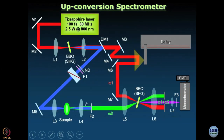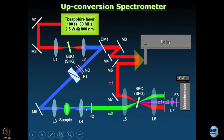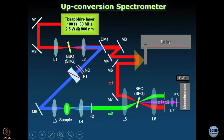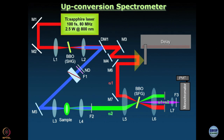Once again we have the familiar focusing-and-collecting optics arrangement. If alignment is perfect, a collimated beam emerges from the lens, but it is anything but monochromatic — it contains blue excitation light as well as fluorescence, and the blue light is more intense. That is why filter F2, a long-pass filter, is used: it cuts out the blue excitation laser light and allows only fluorescence to pass through. This lens then focuses the fluorescence onto the sum frequency generation crystal.